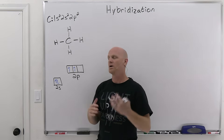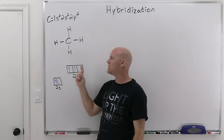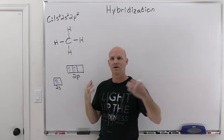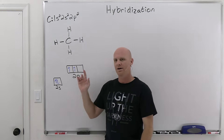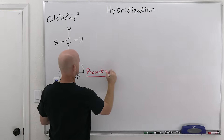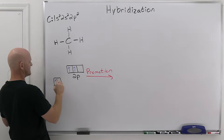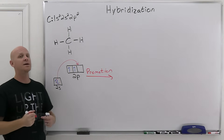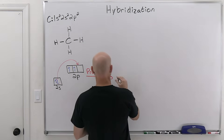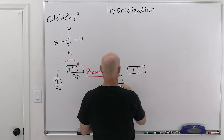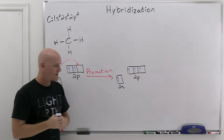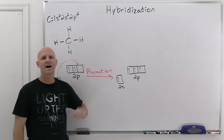Valence bond theory gets around this problem through what's called a promotion. We're going to promote one of these electrons up into a higher energy orbital — just like when you get a promotion within a company you get a higher position, here this electron ends up in a higher energy atomic orbital. After promotion, we now have four unpaired electrons, and carbon is now ready to make four bonds.